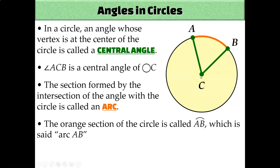A central angle is an angle whose vertex is the center of a circle. For example, angle ACB is a central angle of circle C because its vertex is point C, which is also the center of the circle. The angle intersects the circle at point A and point B. The curved segment connecting A to B — basically the pizza crust — is called an arc. When writing the name of an arc, you draw a little arc on top of the two letters, so this would be called arc AB.